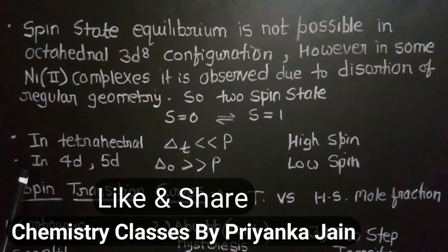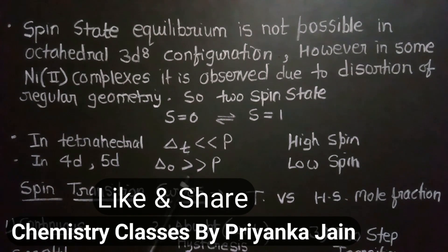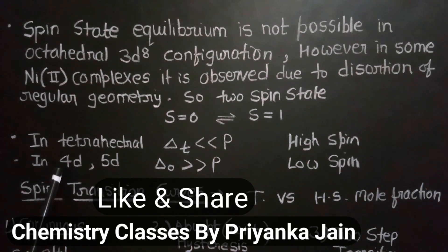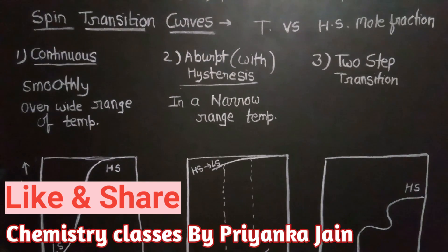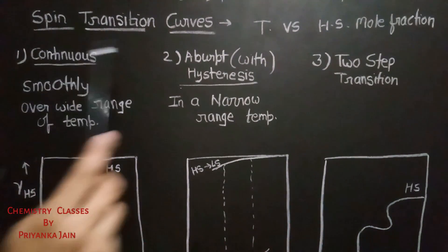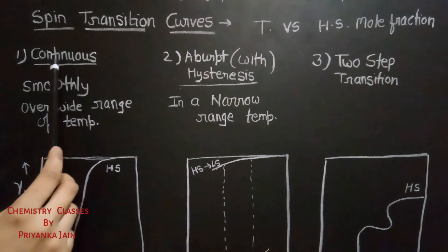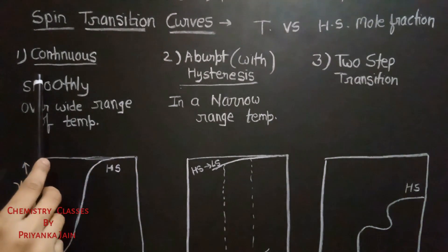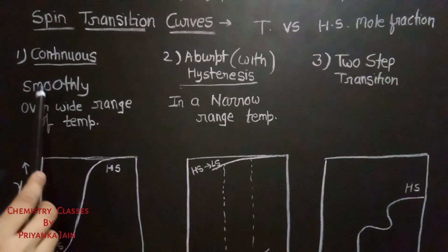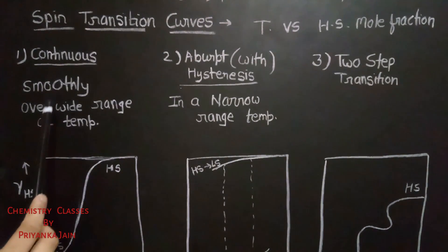Spin crossover is most common in the 3d series. In 4d and 5d series, Δo is much higher than pairing energy, so electrons pair up and low spin complexes are favored — spin crossover is not observed. It is especially common in d5, d6, and d7 complexes of the 3d series. Spin transition can be understood using spin transition curves, which plot temperature against the high spin mole fraction.